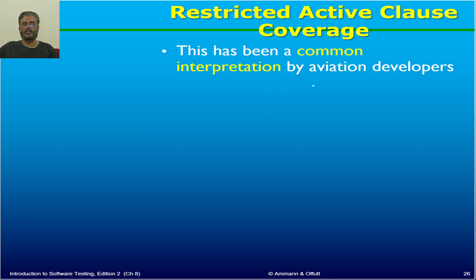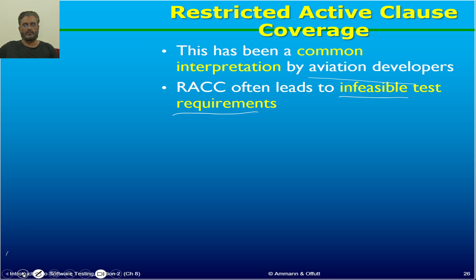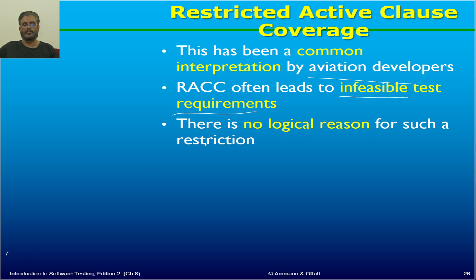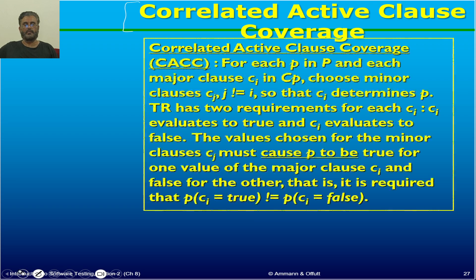This has been a common interpretation by avionics developers and it often leads to infeasible test requirements — requirements for which we cannot actually write test cases or which cannot be achieved by any sort of test. There is no logical reason for such a restriction, so we come up with another coverage criteria called Correlated Active Class Coverage, abbreviated as CACC.